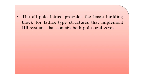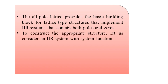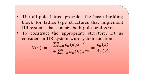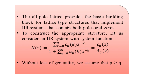For construction of the appropriate structure, consider an infinite impulse response system with system function H(z) equal to the ratio where the numerator is the summation from k equals zero to q of C_q(k) multiplied by z to the power minus k, and the denominator is one added to the summation from k equals one to p of A_p(k) multiplied by z to the power minus k. We denote the numerator as C_q(z) and the denominator as A_p(z), with the assumption that p is greater than or equal to q.